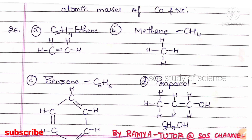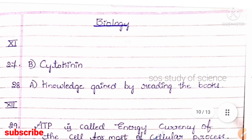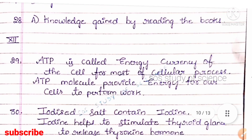Now let us look at the Biology part. The first MCQ: the hormone responsible for good growth of fruits and seeds in plants — right answer is option B, cytokinin. Question 28: the trait that cannot be inherited — knowledge gained by reading books cannot be inherited because it is an acquired trait. Question 29: the function of ATP produced during cellular respiration — ATP is called the energy currency of the cell and releases energy for cells to perform work.